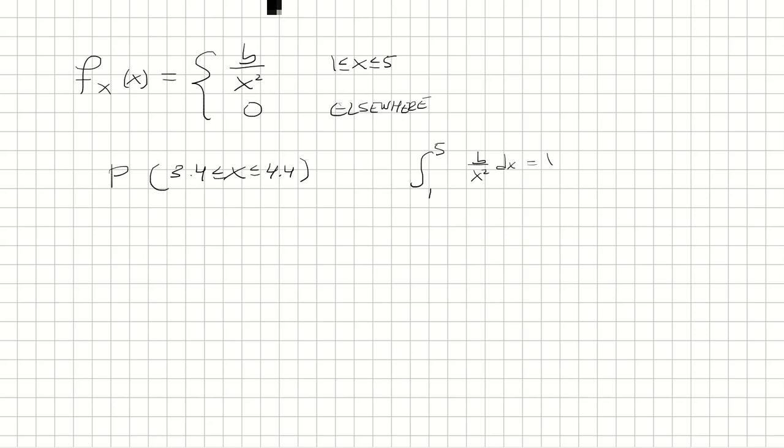So if we integrate this, we can pull out the b, and then bring the x squared on top, so it would be x to negative 2nd power. And the antiderivative of x to negative 2nd power is negative 1 over x. And then we're going to evaluate this from 1 to 5.